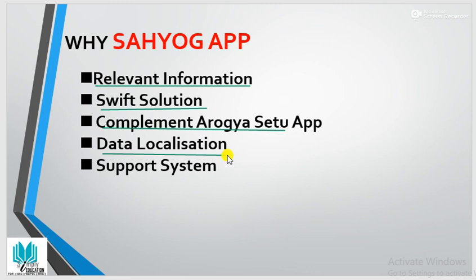Next is data localization. Data collected using the SaWyog application will be used for creating various applications and services, and would facilitate building a dataset that remains inside India — this app is purely indigenous in nature. Additionally, data fed by volunteers on the ground such as ASHA and Anganwari workers will lead to a good support system for the government and doctors at the ground level.